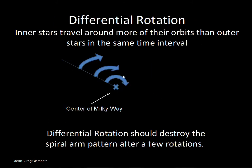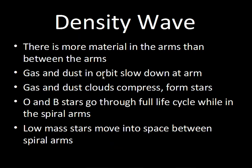One data point was that spiral arms show greater density — more material in the arms than in between. If material moving around runs into an existing concentration of gas and dust, it will slow down and pile in, compressing the gas clouds and causing star formation. The density wave theory says that gas and dust moving around the galaxy slows down when it hits a spiral arm where density is higher; more collisions occur and the compression causes new stars to form — these young O and B stars.